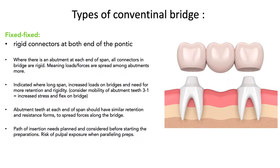We'll cover the different types of conventional bridges, starting with the fixed-fixed design, which utilizes rigid connectors at both ends of the pontics. This can replace one to two teeth and sometimes even three-tooth spans, but the longer the span, the more stress and flexing on the bridge, which increases the chances of failure. The abutment teeth need to be parallel, which is difficult to achieve over a longer span and increases the chance of pulp exposure. The abutment teeth also need to have similar retention and resistance form so that forces can spread more evenly along the bridge.